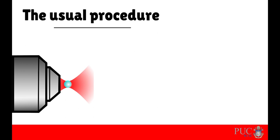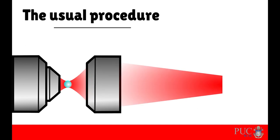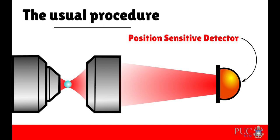To measure the position of the trapped particle, a second objective lens is used to collect the light scattered by the particle and focus it onto a position-sensitive detector.